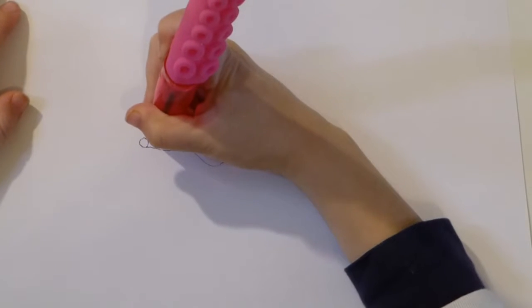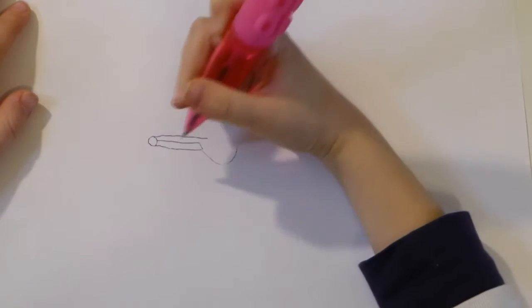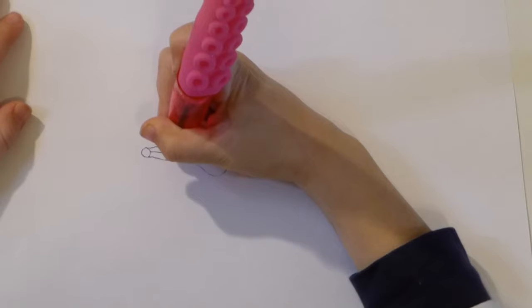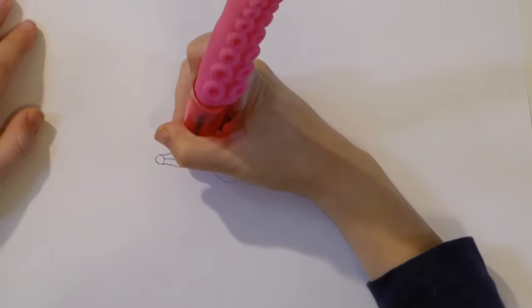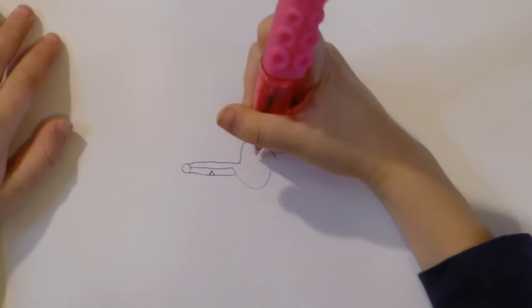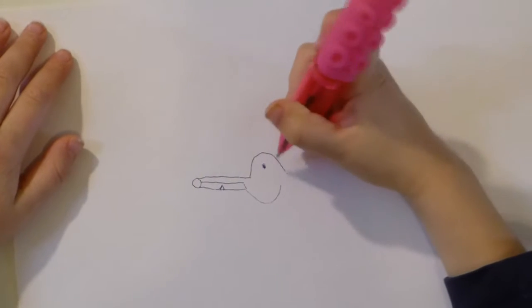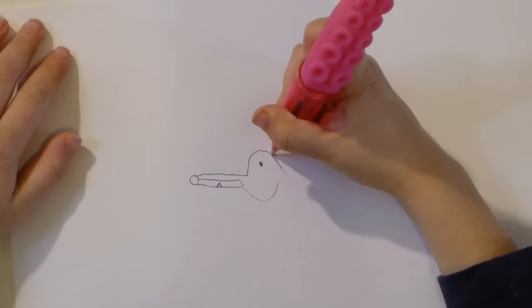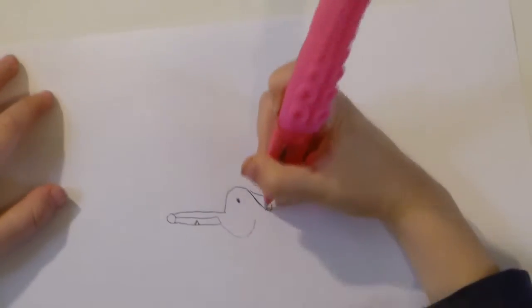Draw a line and then come down and draw up and down to make a smile. Then you make sort of an A shape and make a circle for its eye. Then you draw like a U shape to make its ear.